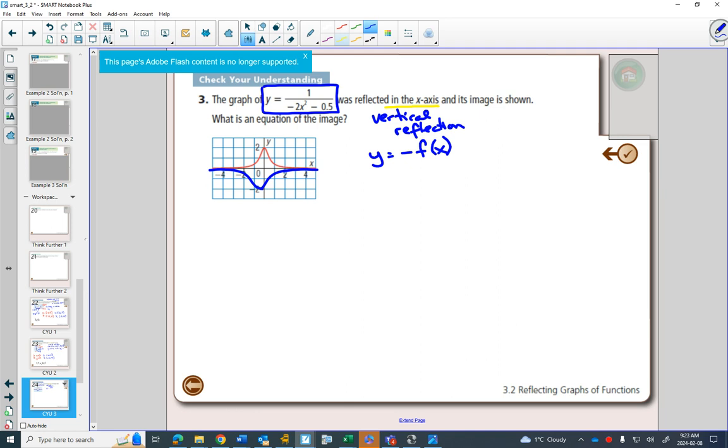Because the question said it's image is shown, not the original graph. That's important as far as reading goes, because 90% of questions you've done in your lifetime that involve graphs, right? If they give you an equation and then give you a graph, 90% the equation they give you is the graph that they show you.